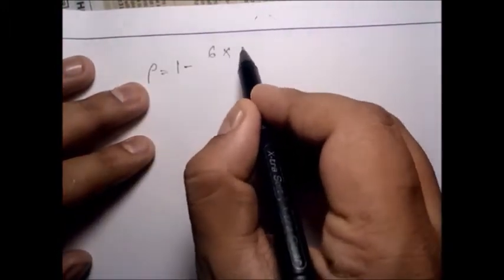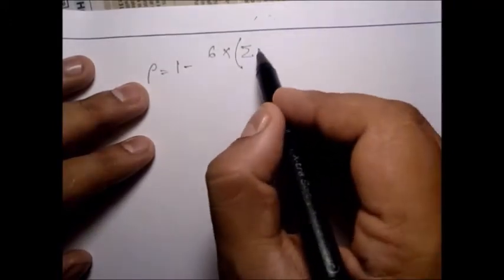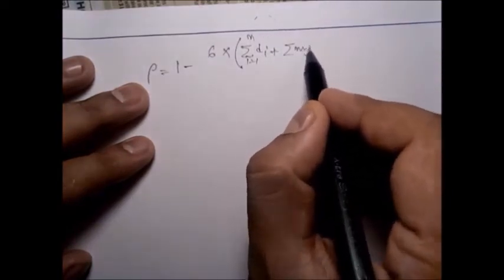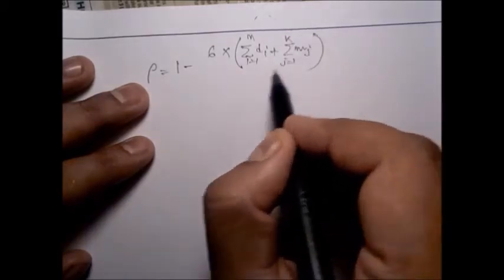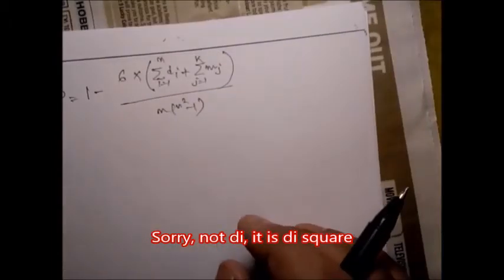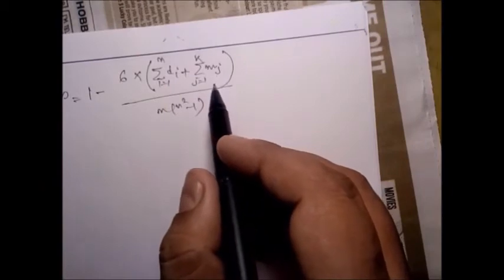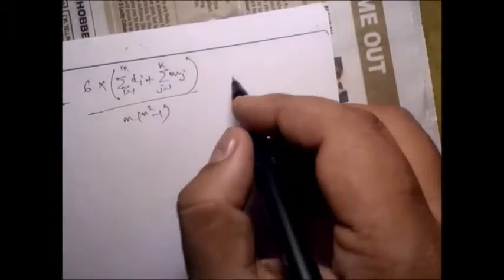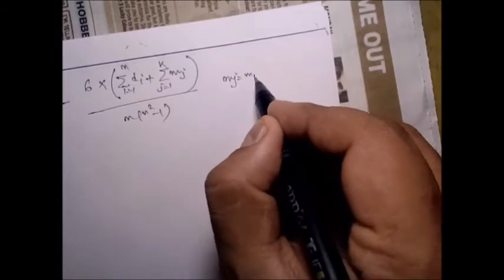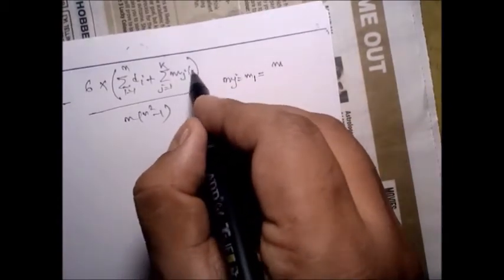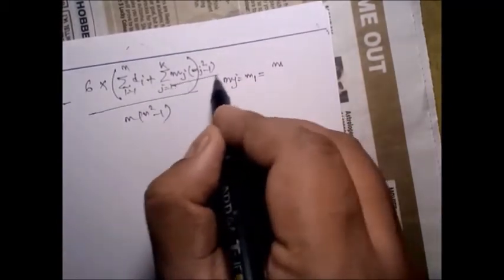The formula for repeated ranks is: rho equals 1 minus 6 times [summation of d_i (i=1 to n) plus summation of (m_j³ minus m_j)/12 (j=1 to k)] divided by n times (n-squared minus 1), where m_j is the number of repetitions for each tied group.